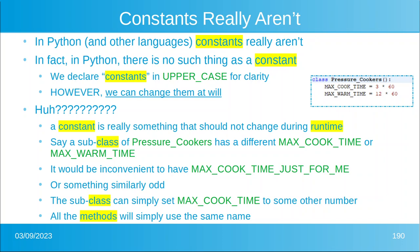Now let's say a subclass of pressure cookers has a different max cook time or max warm time. It would be really inconvenient and silly to have some variable called max cook time just for my type of cooker, and then you would have to change it in all of the methods that ever use those constants — and that would be a real pain. The subclass can simply set max cook time to something else — instead of three times 60 minutes, maybe it's four times 60 minutes — but it will be a constant during the actual processing of the program. So it's something that should not change during runtime. All the methods will simply use the same name, and everybody's happy.